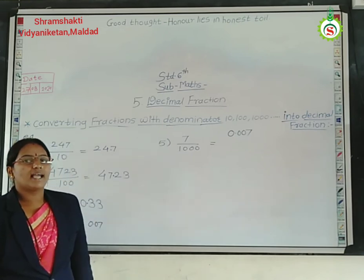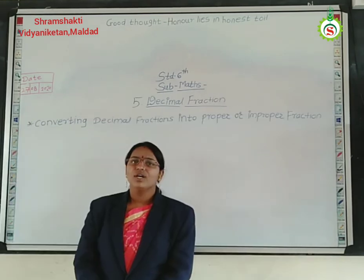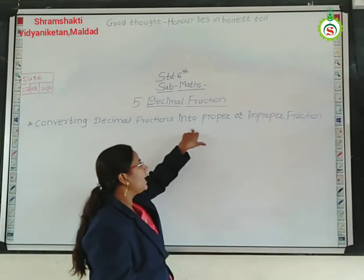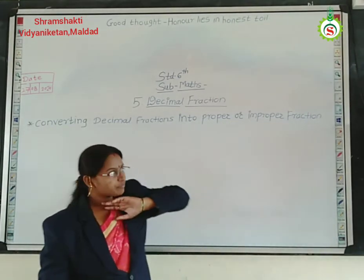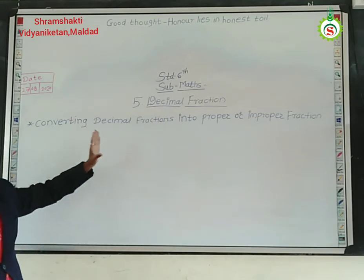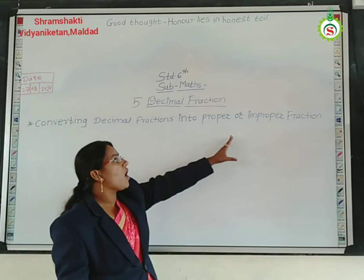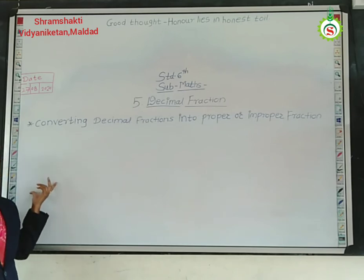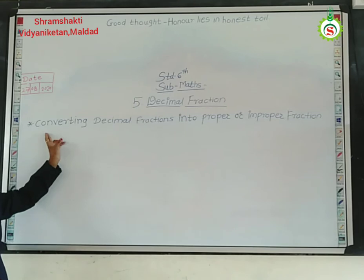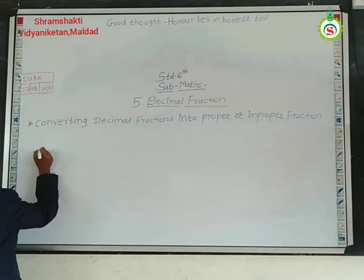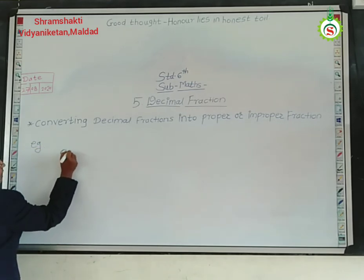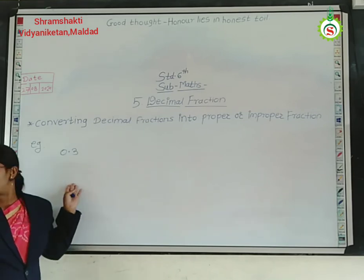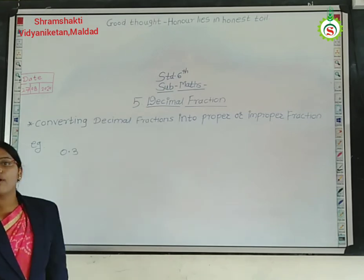Now we will see the second point — converting decimal fractions into proper or improper fractions. This is exactly the reverse of what we have just seen. Now here you have been given decimal fractions. For example, they give 0.3, which is a decimal fraction, and you have to convert this decimal fraction into a proper or improper fraction.